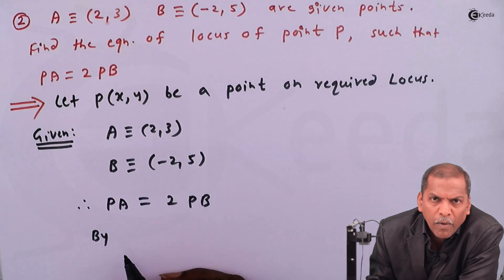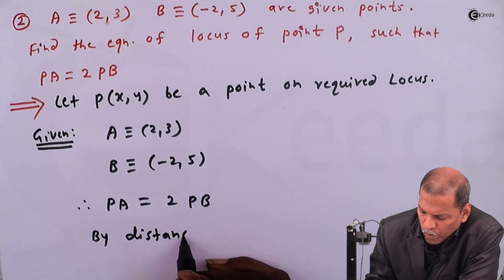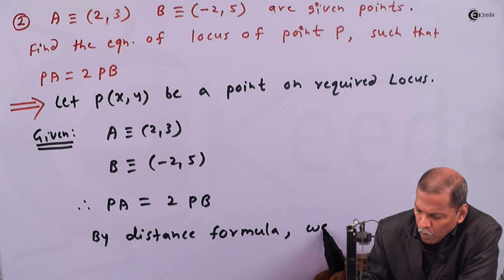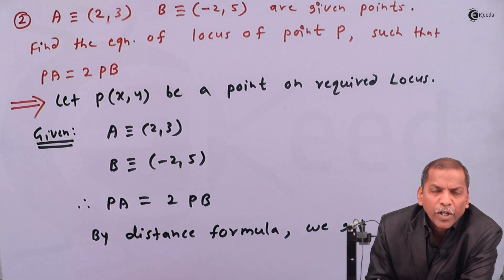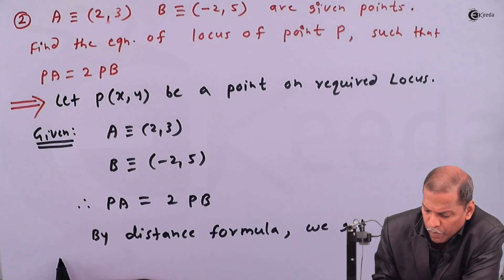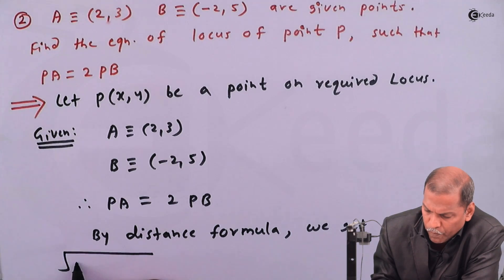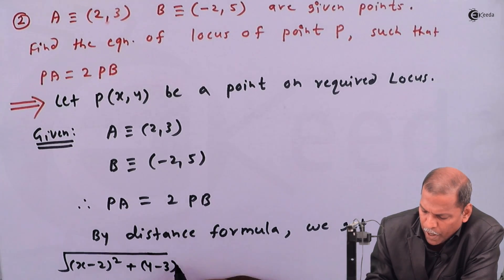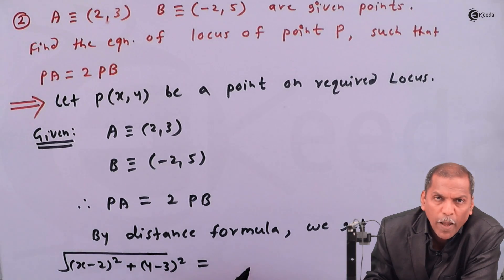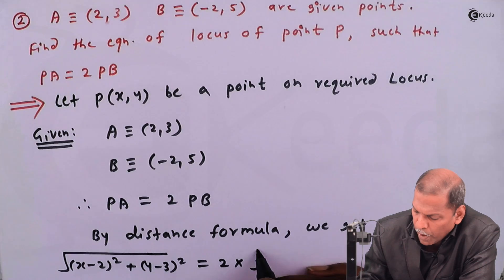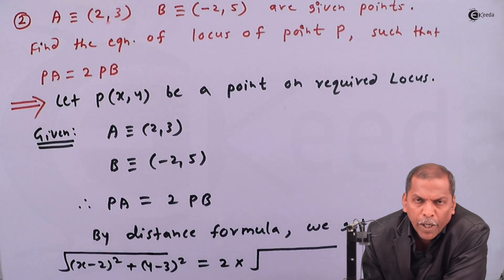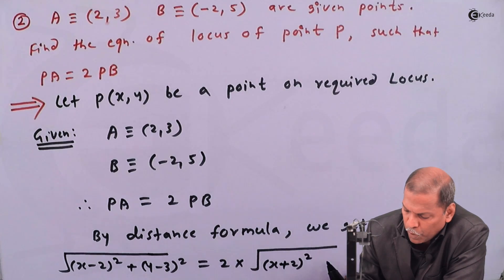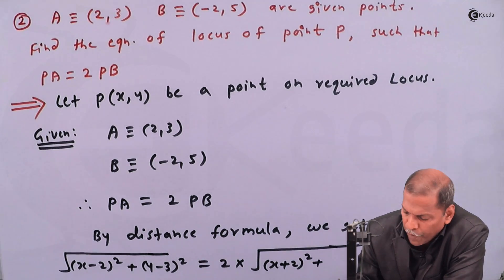So by the distance formula we get: first we apply the distance formula between P and A, so that is square root of (x minus 2) whole squared plus (y minus 3) whole squared, and that equals 2 into square root of (x plus 2) whole squared plus (y minus 5) whole squared.